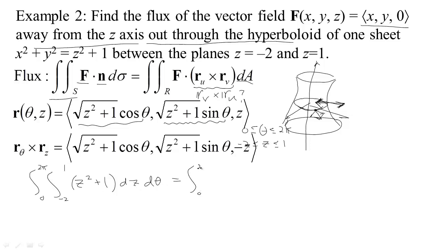This integral is easy enough that we can just pop it out. We just have to find an antiderivative of z squared plus 1 which would be 1 third z cubed plus z, evaluate that between negative 2 and 1, and then integrate that with respect to theta. So we get the integral from 0 to 2 pi of, when we plug in 1 we get 1 third plus 1, that would be 4 thirds minus, when we plug in negative 2, we get negative 8 thirds and negative 2. Then we just need to integrate that d theta.